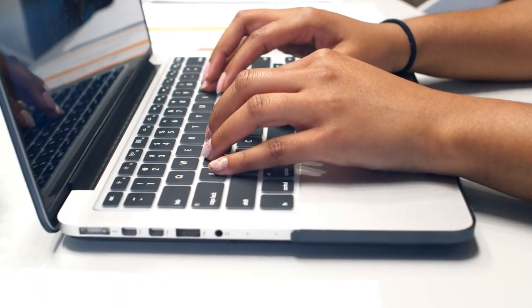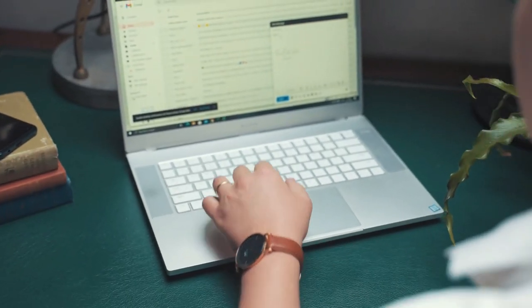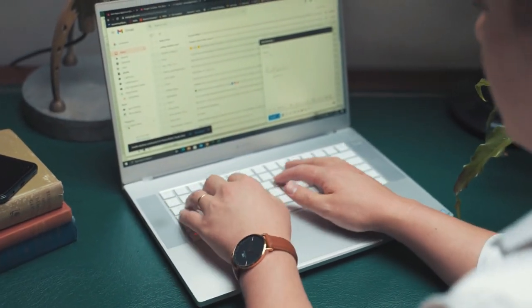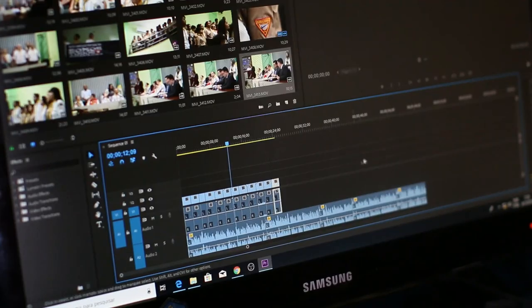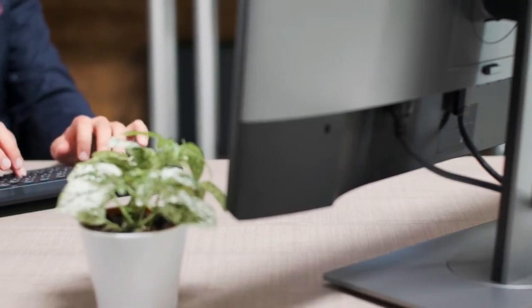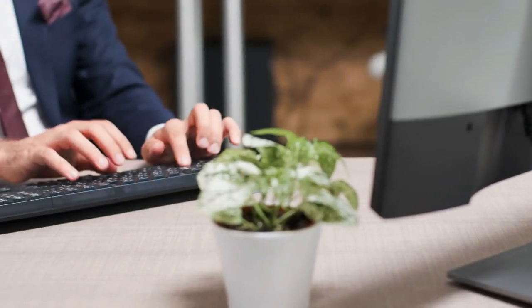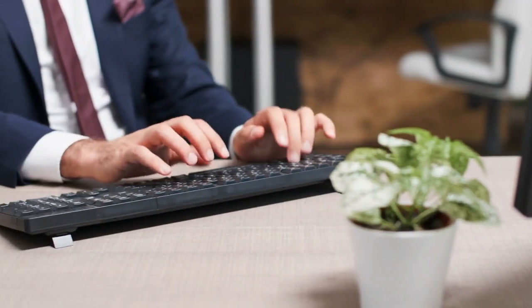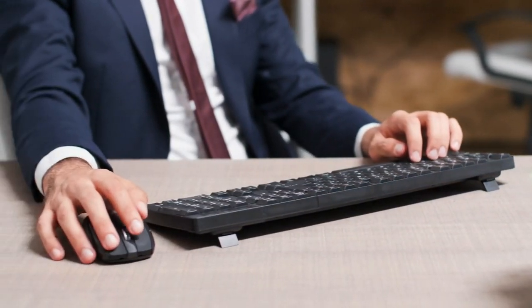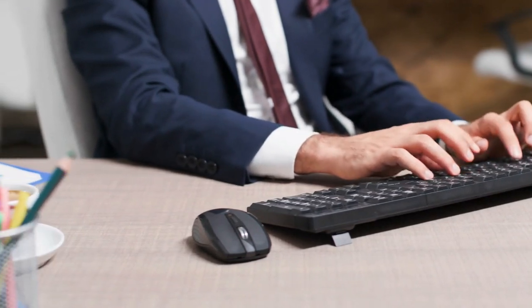Start typing an email in Gmail. Click on the Help Me Write button. The AI will generate a draft of the email based on your input. You can then edit and finalize the email. To use the Help Me Write tool, simply start writing an email and click on the Help Me Write button. The tool will generate an email draft that can then be personalized as needed.